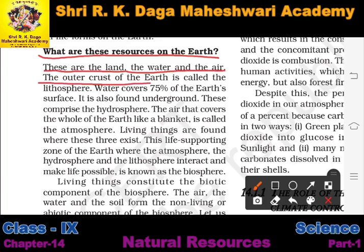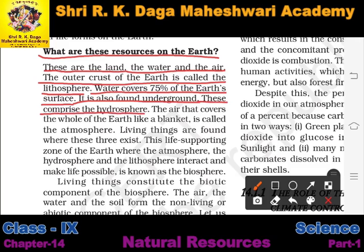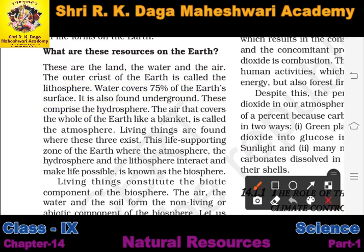The outer crust of the Earth is called the lithosphere. Water covers 75% of the Earth's surface — about 75% is water and the remaining 25% is land. Water is also found underground. The part of Earth where water exists is called the hydrosphere.